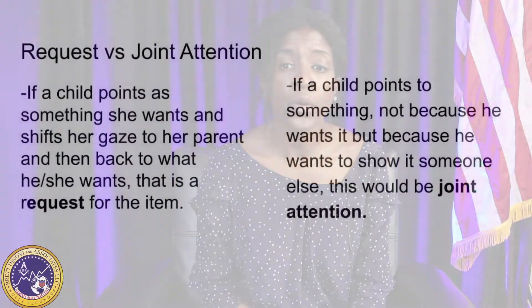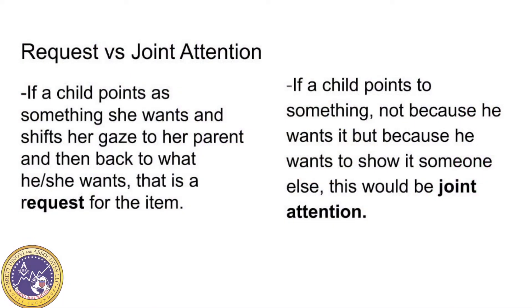Individuals who engage in triadic joint attention must understand both gaze and intention to establish a common reference. There's an important distinction between making a request and joint attention. If a child points at something she wants and shifts her gaze to her parent and then back to what she wants, that's a request for the item. If a child points at something not because he wants it, but because he wants to show it to someone else, that would be joint attention.